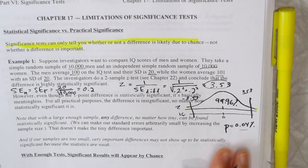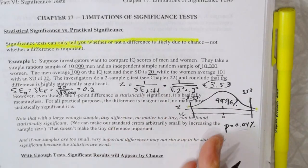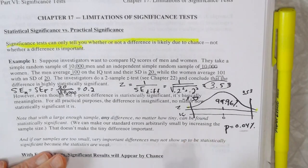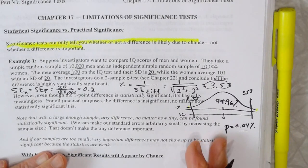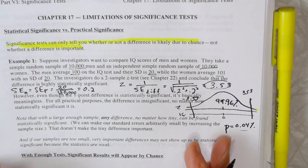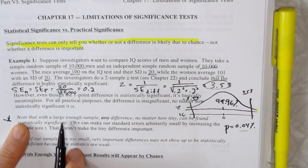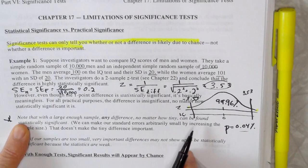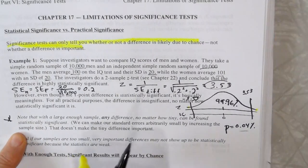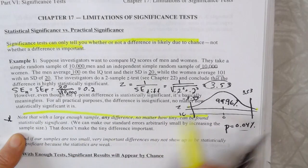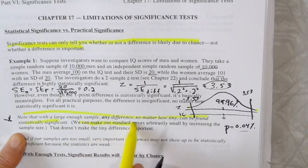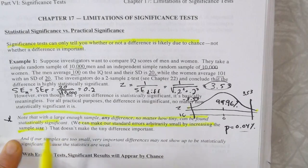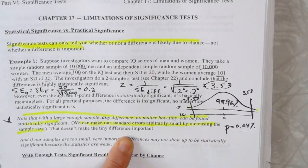But who cares about a one-point difference? That's what I'm saying. It might not be of any practical importance. So don't confuse practical significance with statistical significance. Because with a large enough sample size, any difference, no matter how tiny, can be found to be statistically significant. Because our standard errors, we can make them arbitrarily small by increasing the sample size. But that doesn't make the difference, that tiny difference, important.